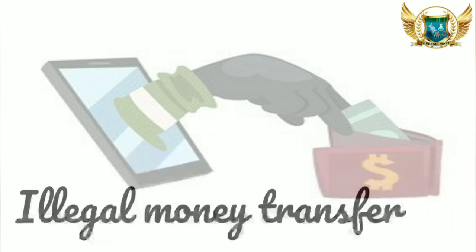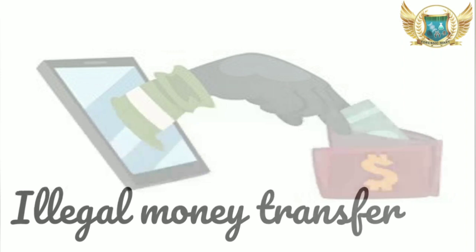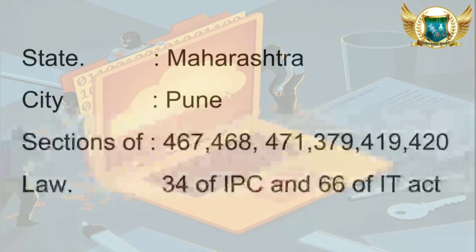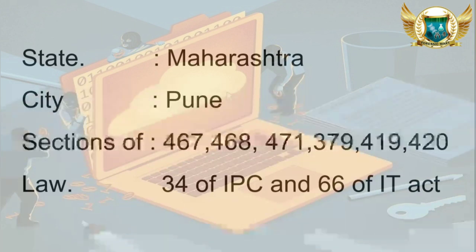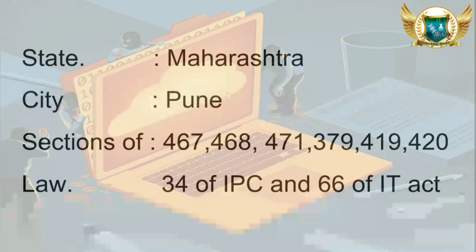Welcome everyone to our YouTube channel. Today we are here with another case study related to cyber forensics: an illegal money transfer case. The case belongs to the city of Pune, state Maharashtra. The sections of law applied in this case are Section 467, 468, 471, 379, 419, 420, and 34 of IPC, and Section 66 of IT Act.